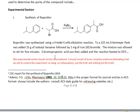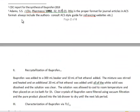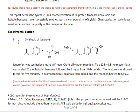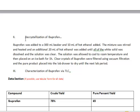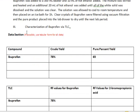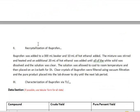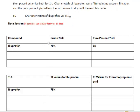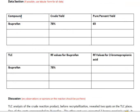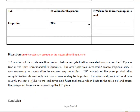Your experimental section will include the synthesis first, then any additional procedures. You did a recrystallization of aspirin, a TLC of aspirin, and a pH test of aspirin — each of those should have its own paragraph. In the data section, use tables where possible. For example, include a table showing percent yield with crude yield and percent yield columns. For the melting point, make a table with two columns for trial one and trial two.